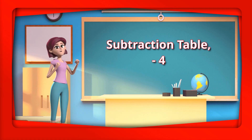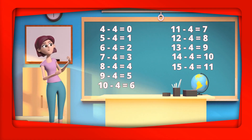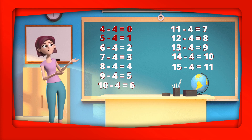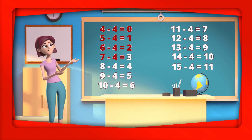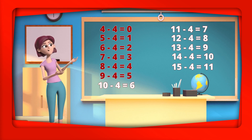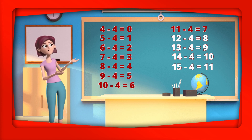Subtraction Table Minus 4. 4 minus 4 equals 0. 5 minus 4 equals 1. 6 minus 4 equals 2. 7 minus 4 equals 3. 8 minus 4 equals 4. 9 minus 4 equals 5. 10 minus 4 equals 6. 11 minus 4 equals 7.